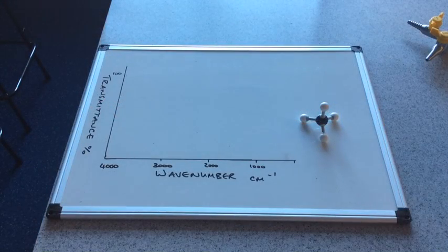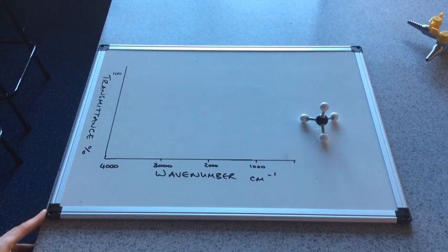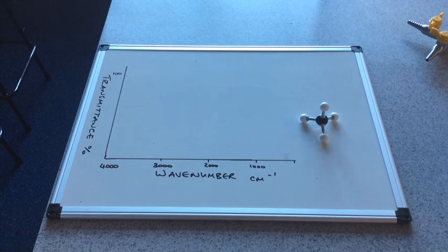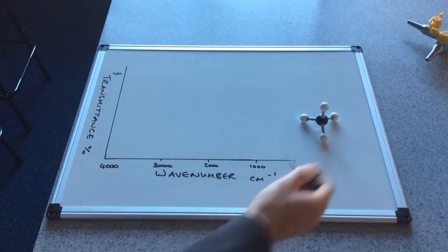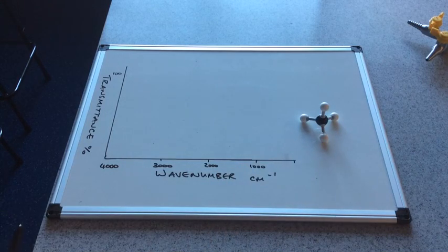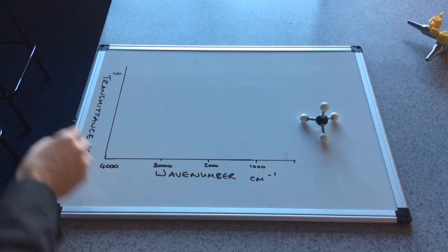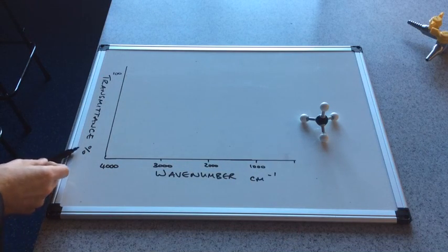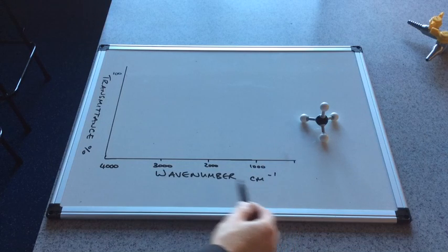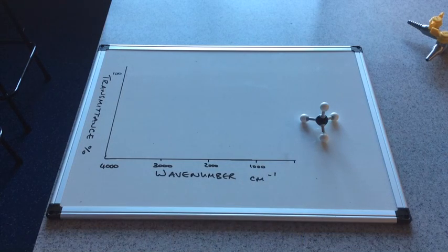So we're going to look now at what the spectrum for methane would look like. I'm keeping it very simple. And I've deliberately chosen methane because we've only got one bond type to worry about. So we've got two axes. We've got a transmittance axis, and that's measured in percent. And we have the wave number axis, and that's measured in centimeters to the minus one.